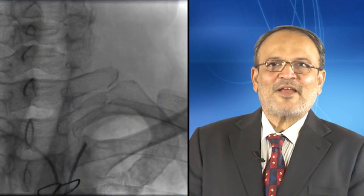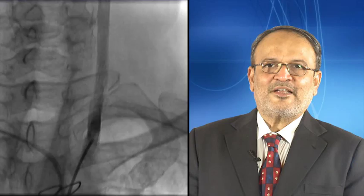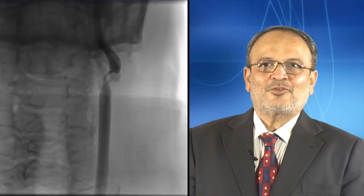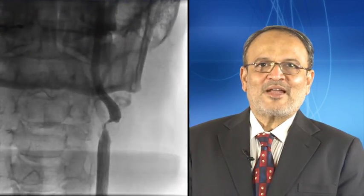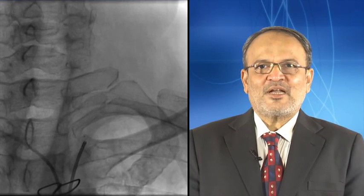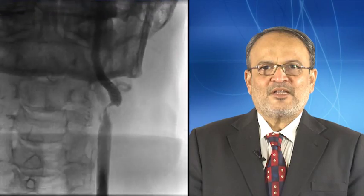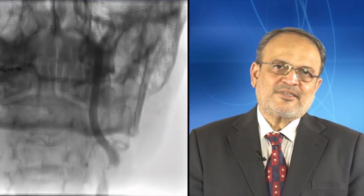Now we will show you how we address internal carotid artery lesions working through the transradial approach. This is a case of left internal carotid artery stenting which was done through the right transradial approach. You can see that the lesion is profiled and a 5F Simon 1 catheter was used to cannulate the left common carotid artery.